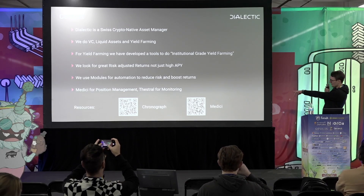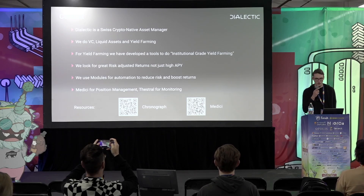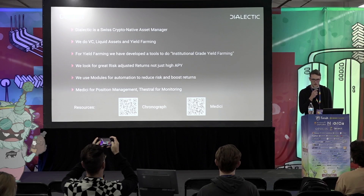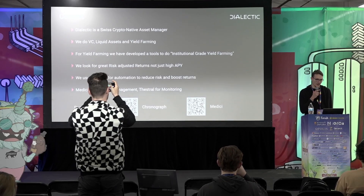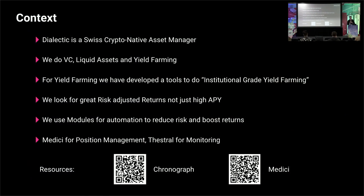There's a QR code down there — the Chronograph one — that's a blog post we recently published, which goes over our risk framework and how we look at yield farming at an institutional grade. We basically use Safe modules across the board. It's the core of our infrastructure. It took us a long time to figure out how it works because the documentation on Safe modules is not that great — it's like two paragraphs of text. So we had to go through all of the hassle of understanding how to set it up properly. The goal of this talk is to give you a rundown and hopefully save you some time.